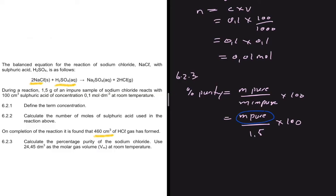To find the mass of pure NaCl, we'll use the volume of HCl formed. The strategy is: find the moles of HCl from its volume, then find the moles of NaCl using the balancing coefficients, then find the mass of NaCl, and finally calculate the percentage purity. In high school chemistry we're always calculating moles — whether for percentage purity or empirical formula — and using balancing coefficients.